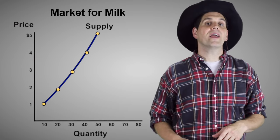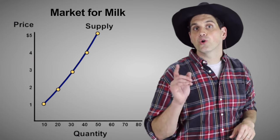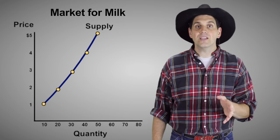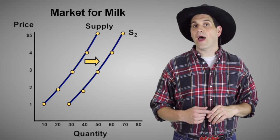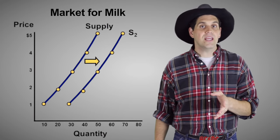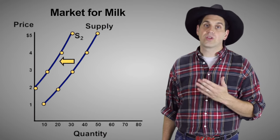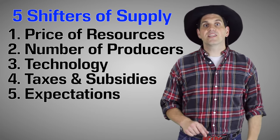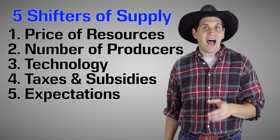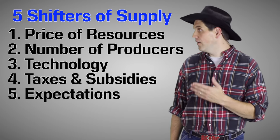But the supply curve can also shift. Just like demand, an increase in supply is always to the right and a decrease is always to the left. Using milk as our example, let's talk about the five shifters of supply.